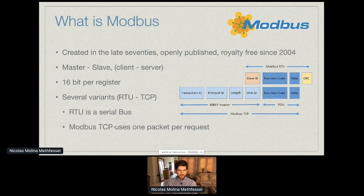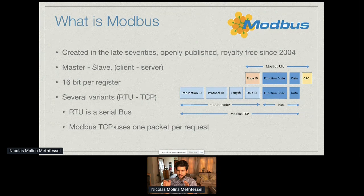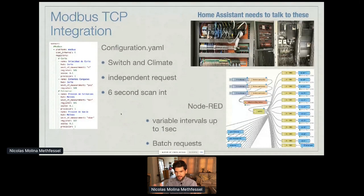There are two main variants — there are about seven, but the main ones are Modbus RTU, which is a serial bus. It works in Home Assistant but you need a bus adapter and a wire that goes from one device to the next. Then there is Modbus TCP, which came around when Ethernet became more widely used. It sends the same Modbus instruction wrapped inside an Ethernet packet — a very small register payload inside a complete Ethernet frame.